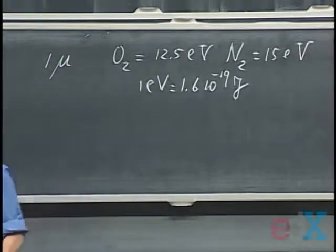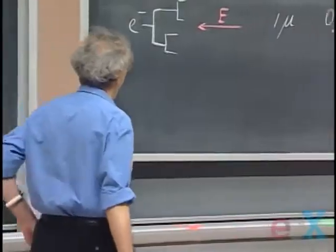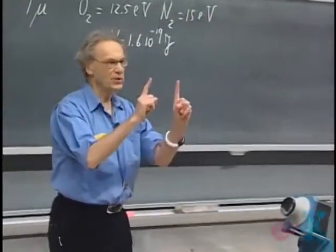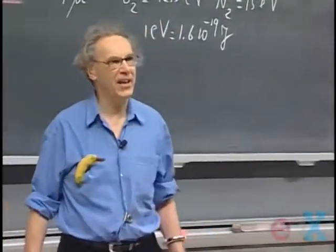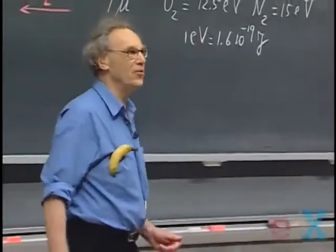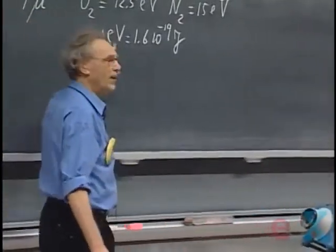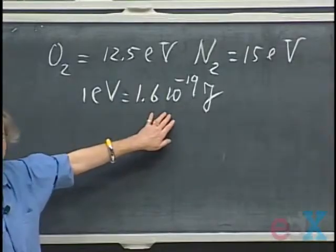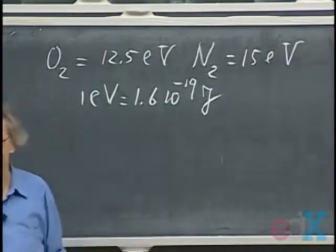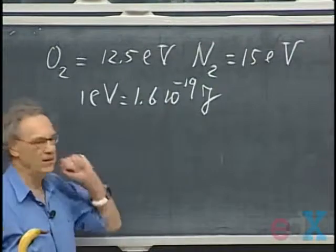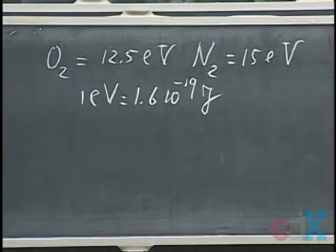Electron volt is actually a very nice unit of energy. Because once you have an electron at rest, and it moves over a potential difference of one volt, it gains in kinetic energy. That's the definition of an electron volt. It gains one electron volt. It's the charge of the electron, which is 1.6 × 10^-19 Coulomb, multiplied by one volt. And that gives you then the energy, one electron volt.